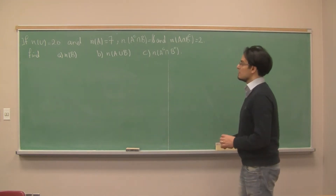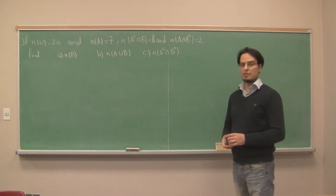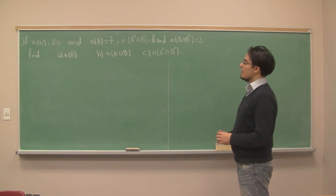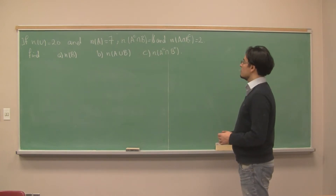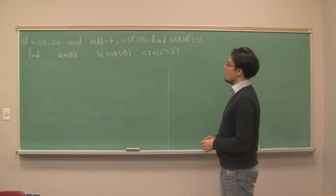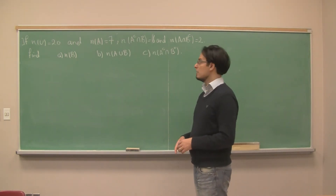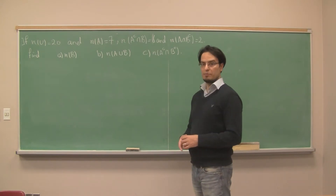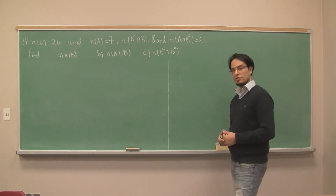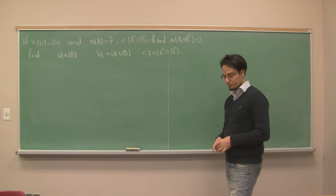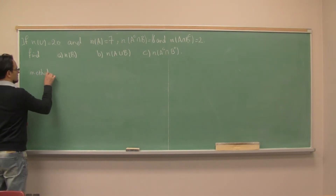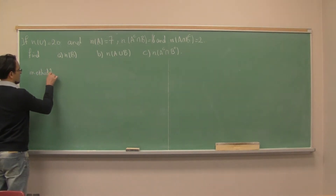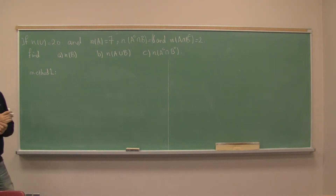The question gives us: N of U, the universal set, is 20; N of A is 7; N of A complement intersect B is 6; and N of A intersect B complement is 2. We are asked to find N of B, N of A union B, and N of A complement intersect B complement.